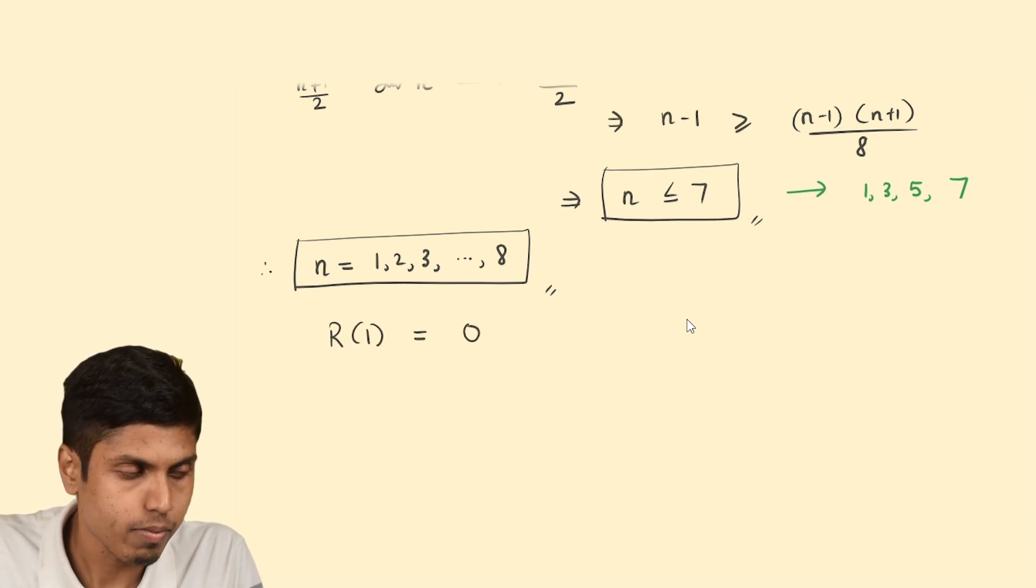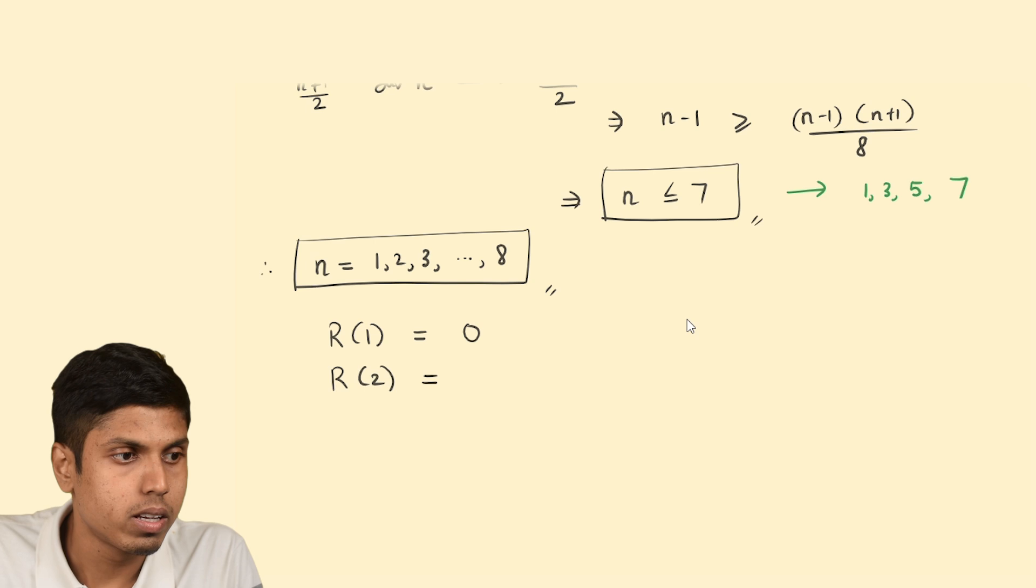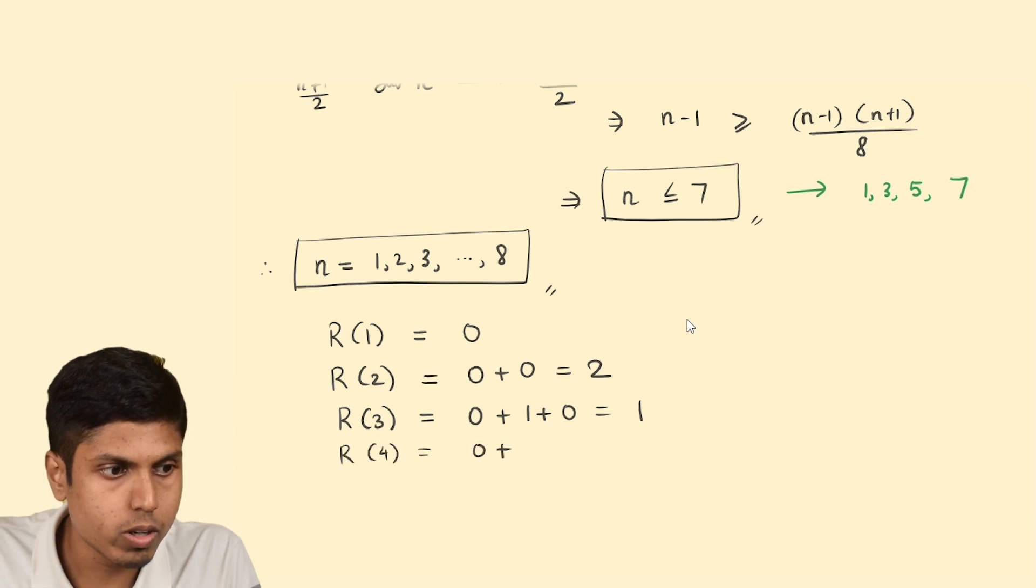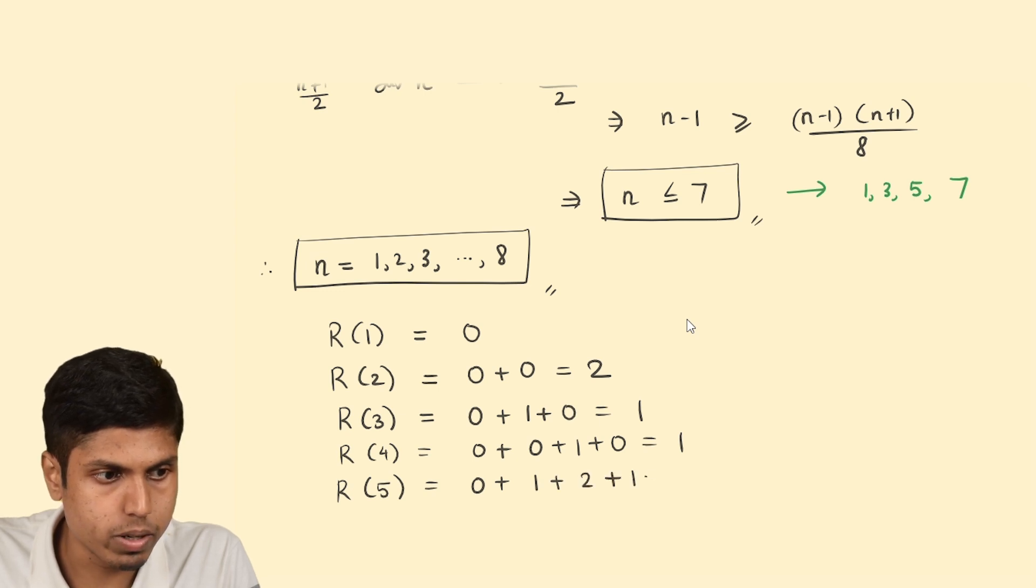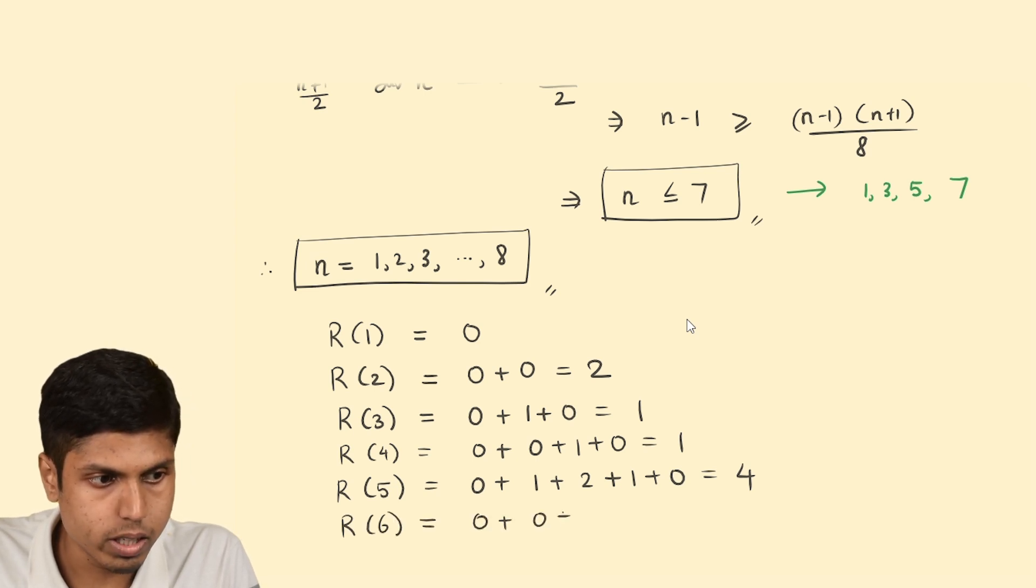R(1) is 0 because when 1 is divided by 1, the remainder is 0. R(2) would be when 1 divides 2 the remainder is 0, when 2 divides 2 the remainder is 0, so it is 2. Similarly for 3, it would be 0 + 1 + 0, which is 1. For 4, 0 + 0 + 1 + 0, which is 1. For 5, 0 + 1 + 2 + 1 + 0, which is 4. R(6) would be 0 + 0 + 0 + 2 + 1 + 0, which is 3.